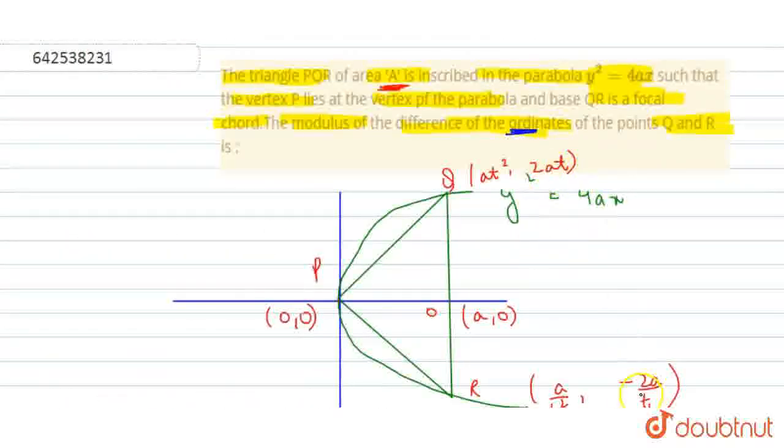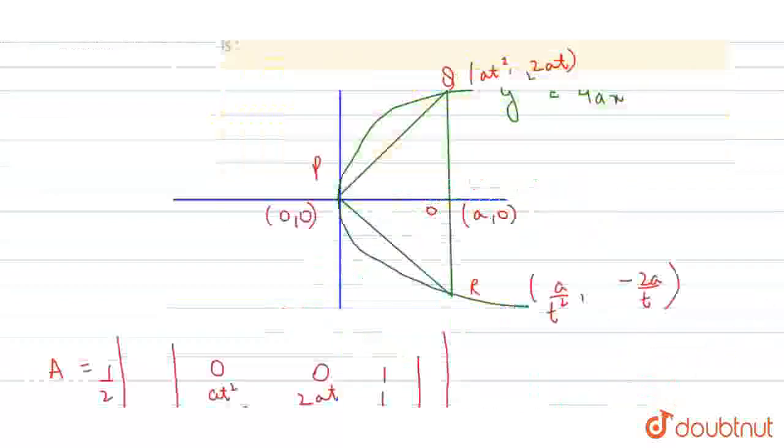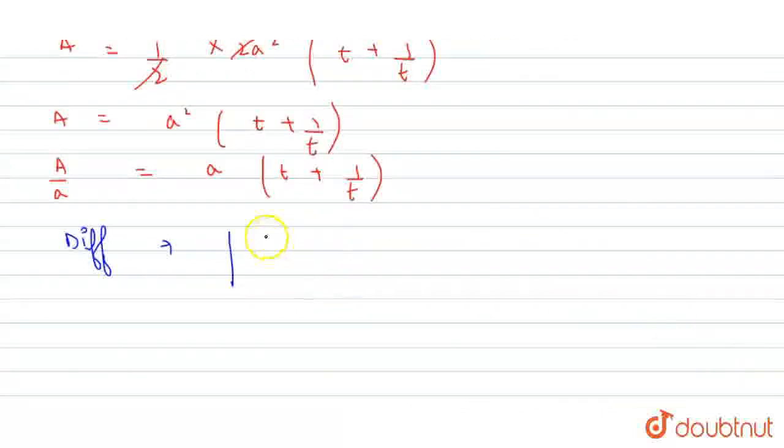The ordinates are 2AT and -2A/T. So 2AT minus (-2A/T) equals 2AT + 2A/T. Take 2A common: 2A(T + 1/T).